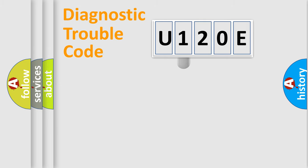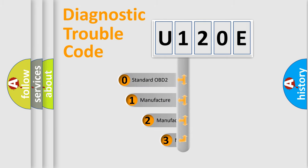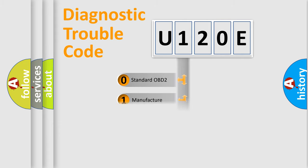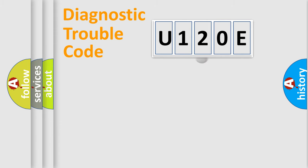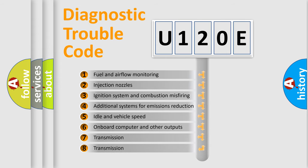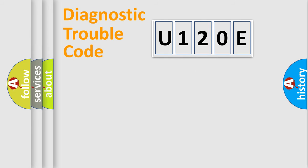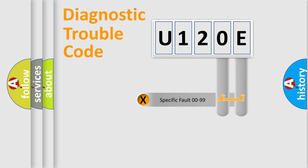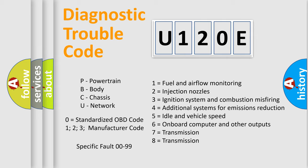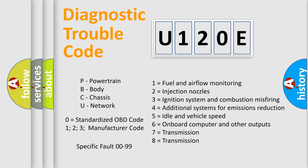This distribution is defined in the first character of the code. If the second character is expressed as zero, it is a standardized error. In the case of numbers 1, 2, or 3, it is a more manufacturer-specific expression of a car-specific error. The third character specifies a subset of errors. Only the last two characters define the specific fault of the group.